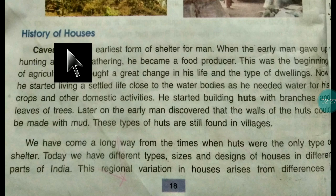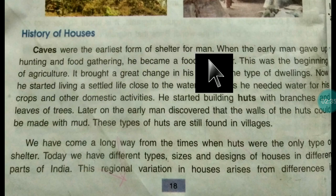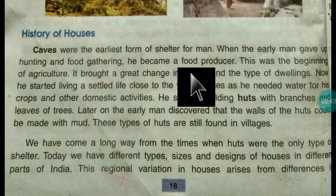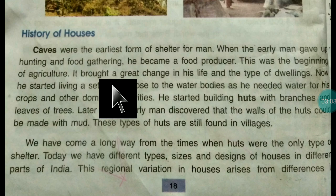Now the next topic is the history of houses. The caves were the earliest forms of shelters for man. When the early man gave up hunting and food gathering, he became a food producer. Earlier, the early man was a hunter and food gatherer, searching for food in different places, but later, after development, he started agriculture.